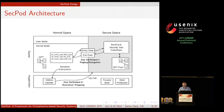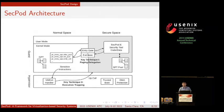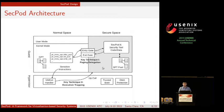This is the SecPod high-level architecture. SecPod creates an isolated address space called the secure space. The secure space contains SecPod and security tools' code and data, and it also maintains a shadow page table pool. Whenever the kernel wants to update the page table, it sends the request to the secure space through a gate — we call this our first technique, paging delegation. The entry and exit gates are the only entry points for the kernel to access the secure space. Malicious attackers in the normal space may try to access the secure space without this gate, and sensitive instructions will be trapped by the hypervisor and forwarded to the secure space for handling — we call this our second technique, execution trapping.